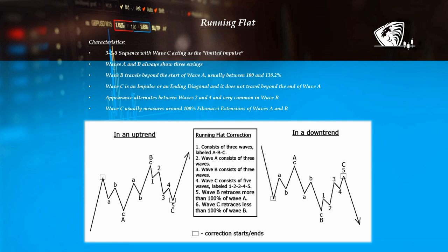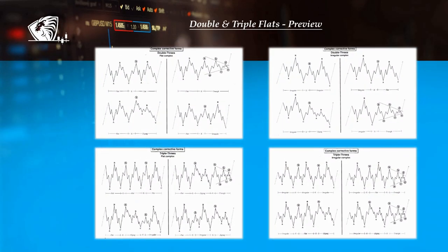Running flat characteristics: 3-3-5 sequence with wave C acting as the limited impulse. Waves A and B always show free swings. Wave B travels beyond the start of wave A, usually between 100 and 138.2%. Wave C is an impulse or an ending diagonal and it does not travel beyond the end of wave A. Appearance alternates between waves 2 and 4 and is very common in a wave B. Wave C usually measures around 100% Fibonacci extensions of waves A and B. Flat corrections, just like zigzags, are considered a bridge for combinations, also called complex structures.